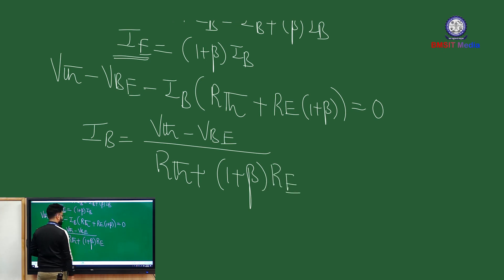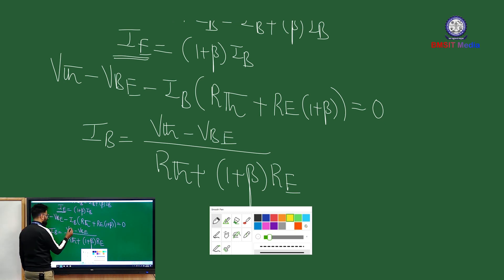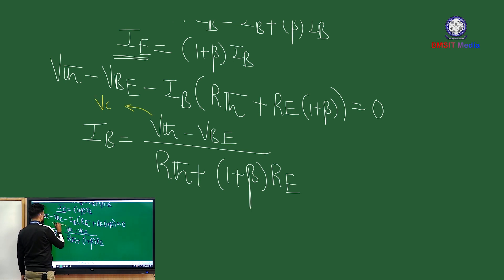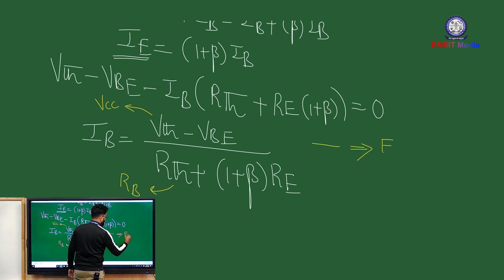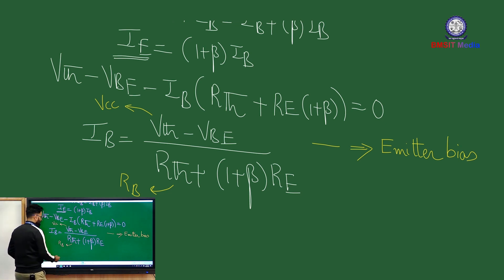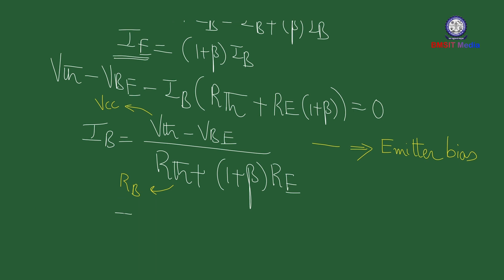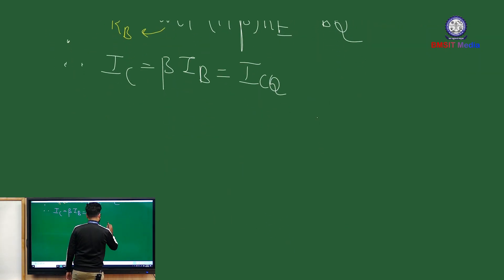As noted for emitter bias, you would have had VCC in place of VTH and RU in place of RTH — that is the difference; the rest remains the same. Once you know IB, you can find IC: IC = β·IB, which gives ICQ. You can also consider the corresponding base current as IBQ.